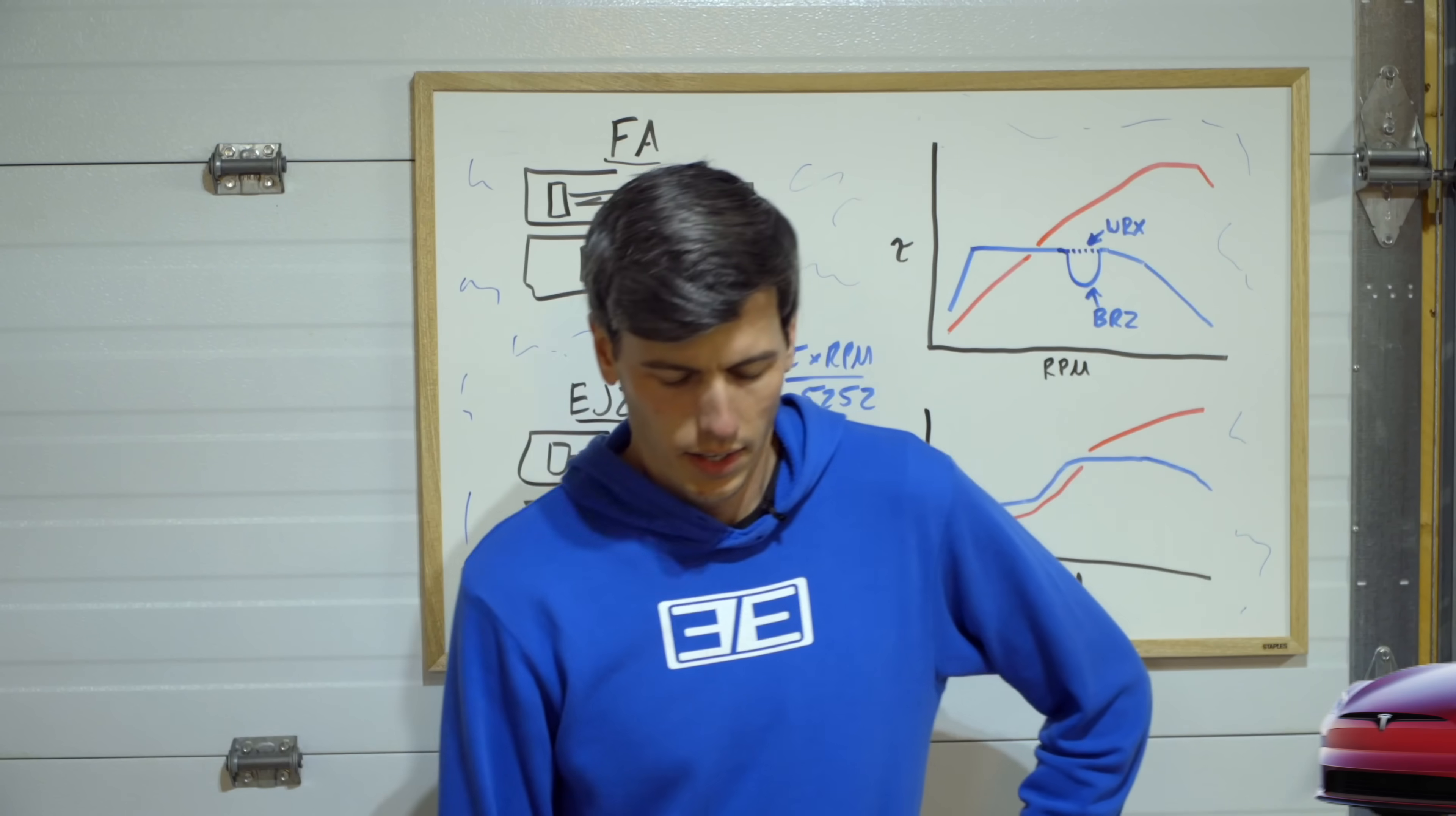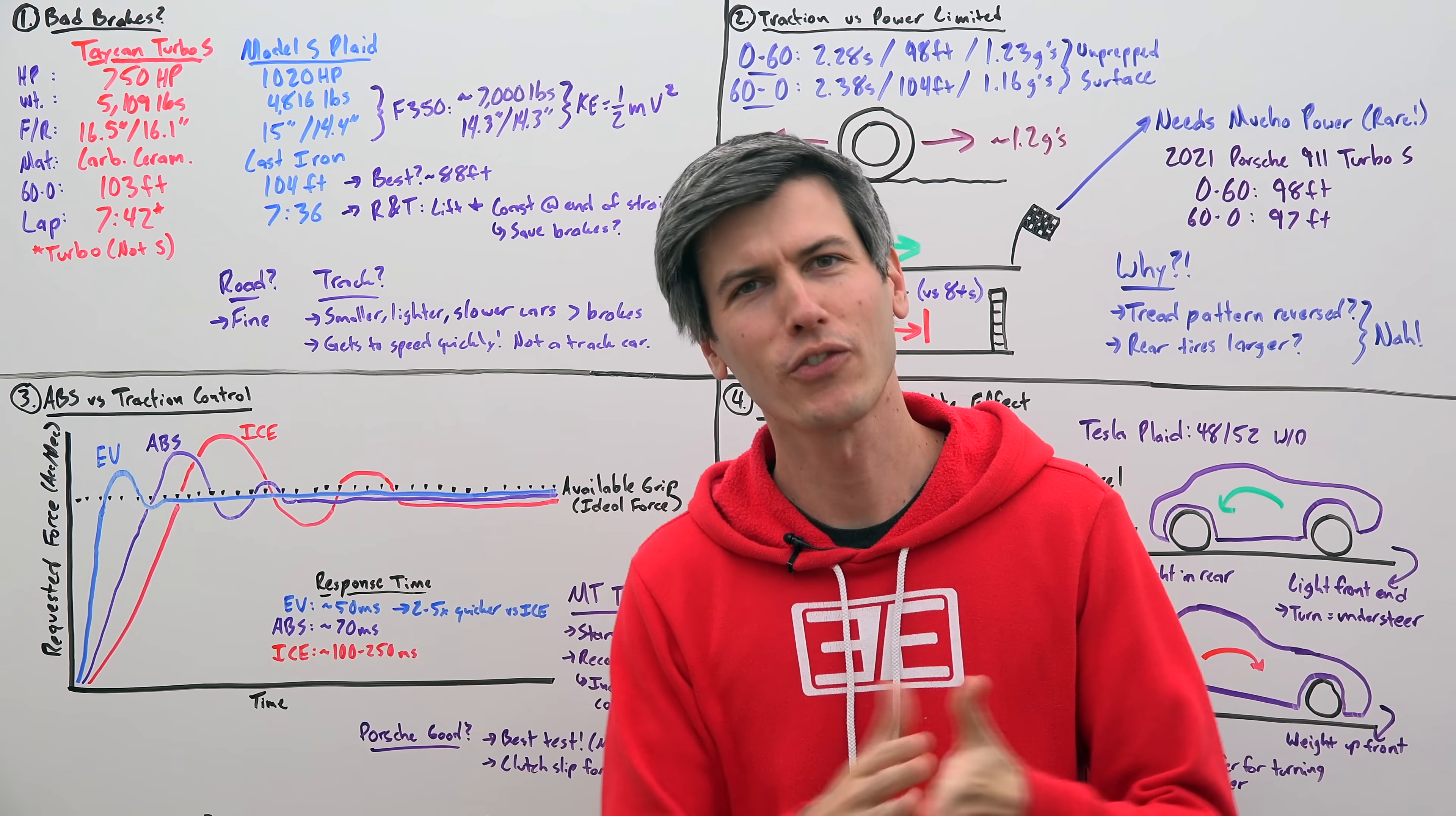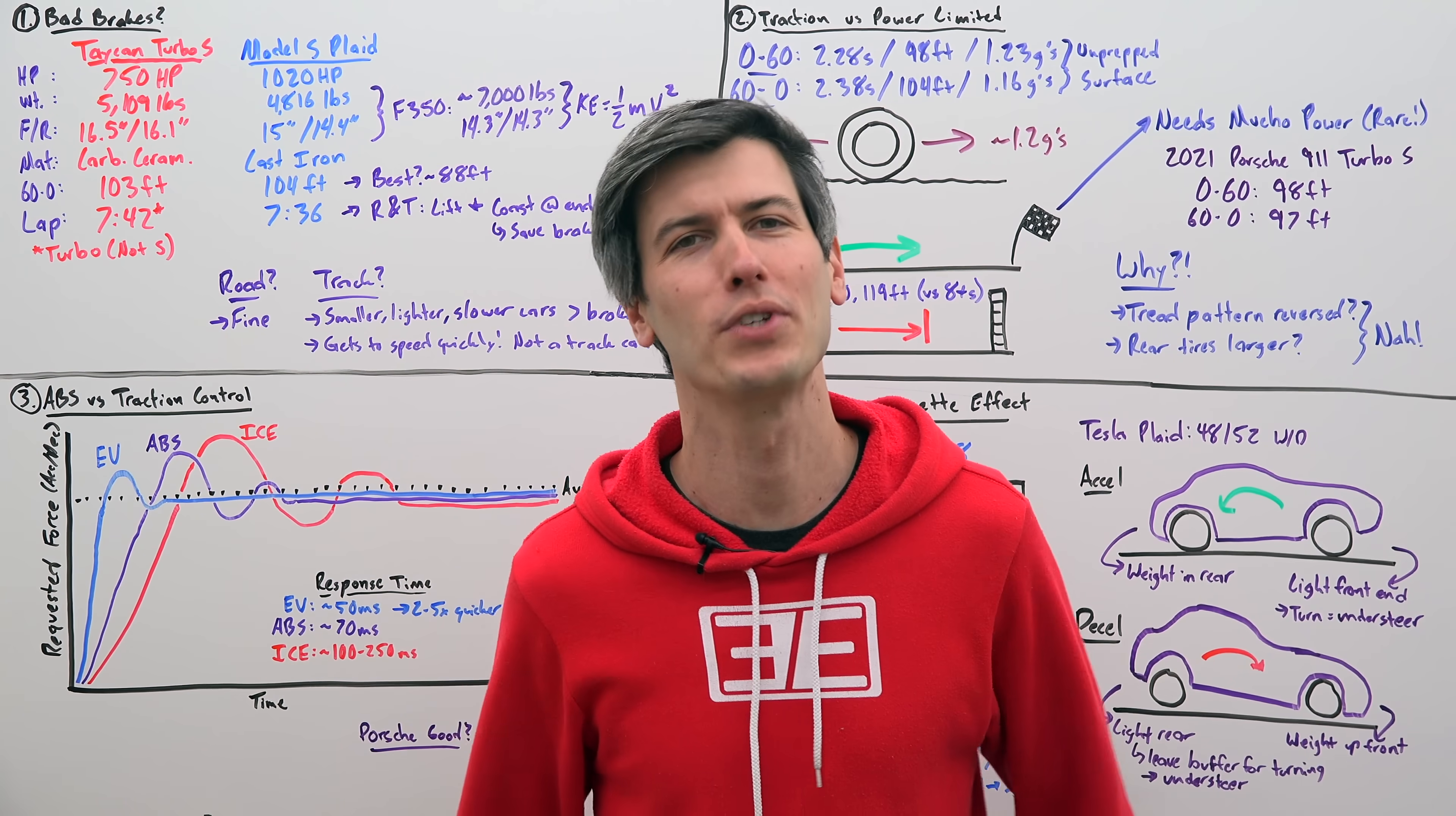Now if you haven't seen it, the wonderful channel Throttle House recently did review the Model S Plaid and one of their main concerns was the lack of brakes. So in this video we're going to break down the numbers and talk about how it is possible to accelerate faster than you decelerate.